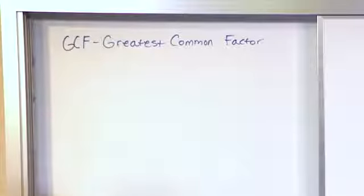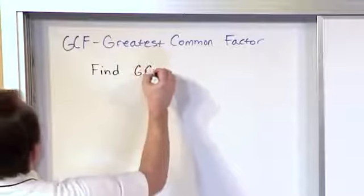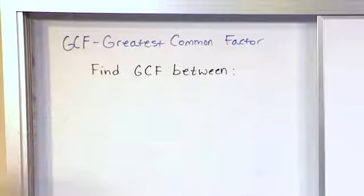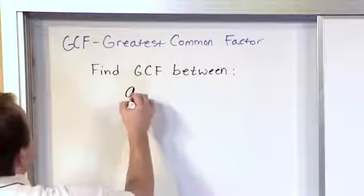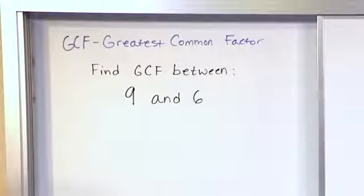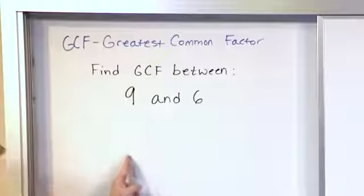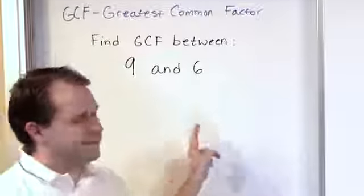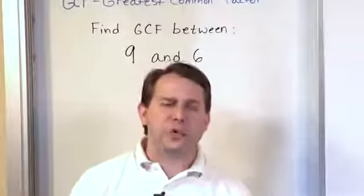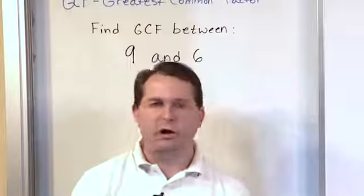The easiest way to do this is by example. If I want to find the greatest common factor, you're usually finding it between two numbers. In this case, between the numbers nine and six. All I have to do is find the factors and make a list of the factors of each number. I'll have two lists of numbers, and I'm just trying to find the greatest, the largest one that's common to both of those lists.